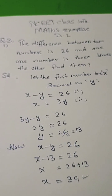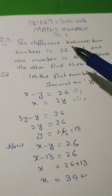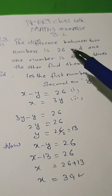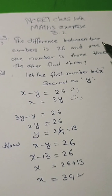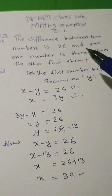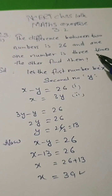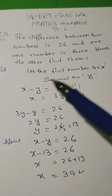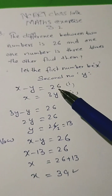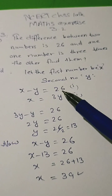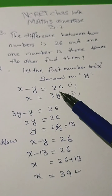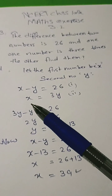Exercise 3.2, question number 3, part first. The difference between two numbers is 26, and one number is three times the other. Let one number be x and the other be y, so the difference x minus y is equal to 26.